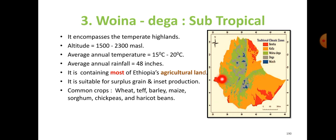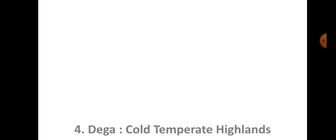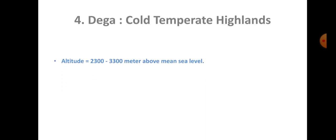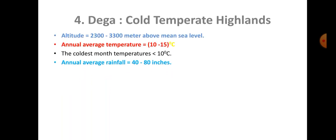Weyna Daga regions include Tigrai, Gonder, Goja, and parts of eastern Hararghe. The next zone, Daga, is also known as the temperate highlands.